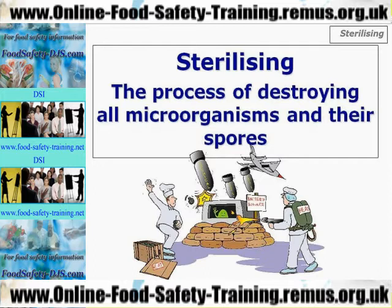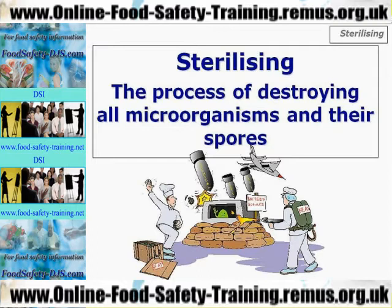Sterilising is the process of destroying all microorganisms and their spores, which in reality is quite difficult to achieve. We can achieve it in the canning industry by cooking the product to 121 degrees Celsius for three minutes or more — called the botulinum cook — which will kill Clostridium botulinum spores. But the term is quite often misquoted and misused; when people say sterilising they sometimes mean disinfected, which is totally different.